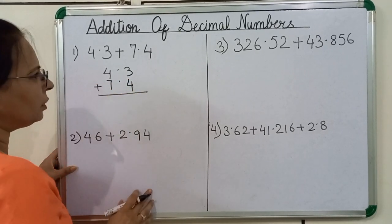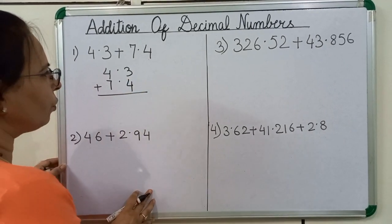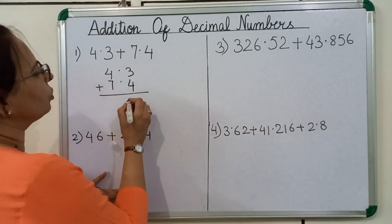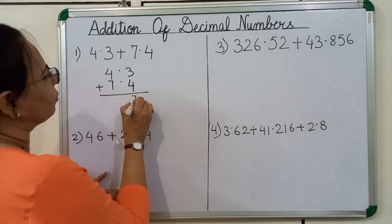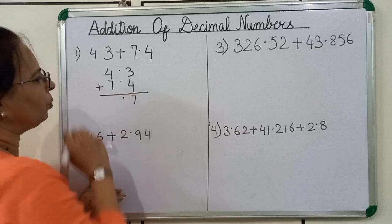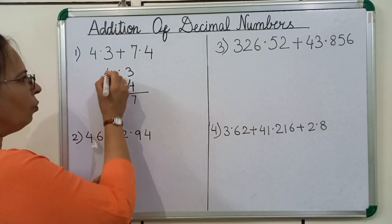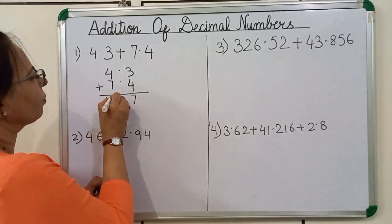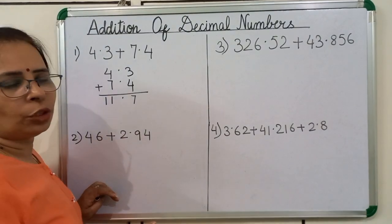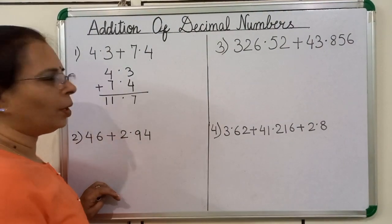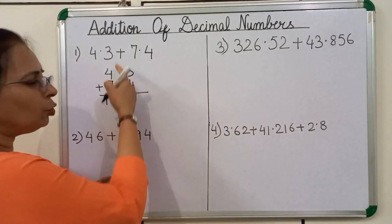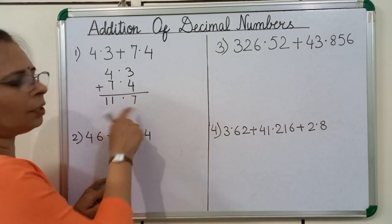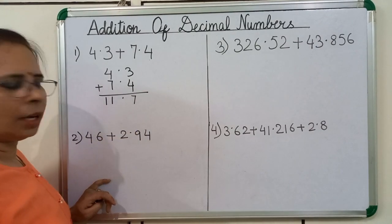We will start addition from right to left. 3 plus 4 is equal to 7. Now we will put the decimal point. 4 plus 7 is equal to 11. One more thing you have to remember: the decimal point should be in one line. 11.7 is our answer.